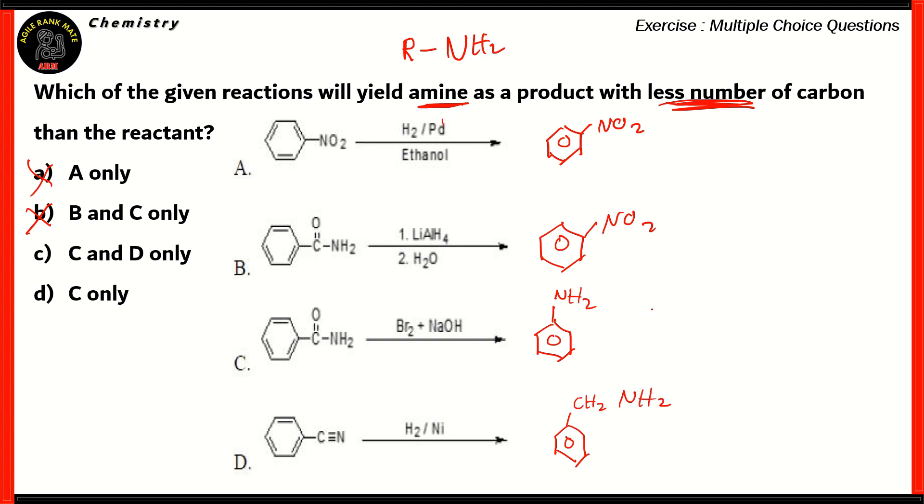So, as you can see, both reactions C and D have the functional group of amine. But if you look at the question, it's asking us to find the product with less number of carbon than the reactant. So, we'll have to compare the reactant and the product.